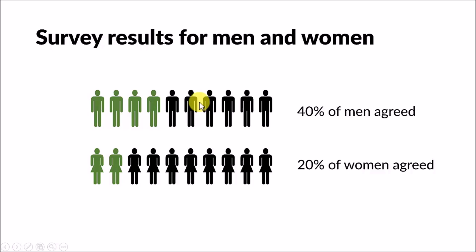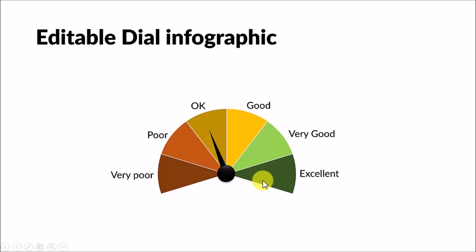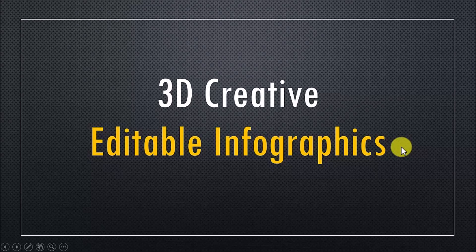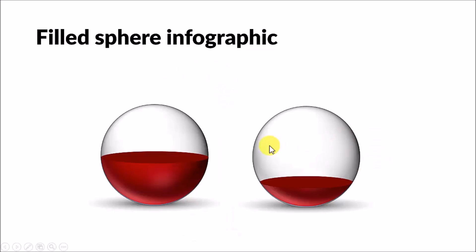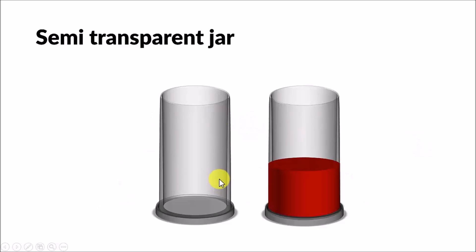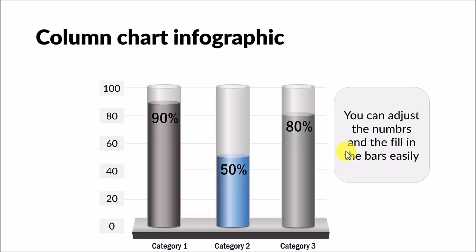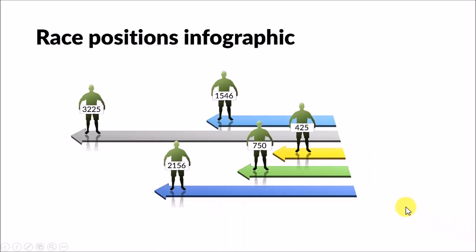Then I teach you how to create an editable dial infographic, which uses the well-known metaphor of fuel gauges to represent numbers or qualitative performance. In the next segment, we will see how to build creative editable infographics using the 3D tools in PowerPoint. These include a thermometer infographic using auto shapes, a filled sphere infographic — with a bonus tutorial on creating transparent 3D spheres — a semi-transparent jar infographic with a bonus on creating hollow cylinders, a column chart infographic using auto shapes, and a race positions infographic featuring a cool trick to achieve the correct angle for arrows.